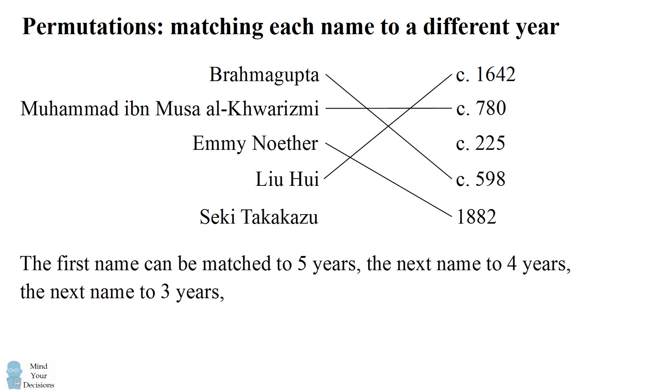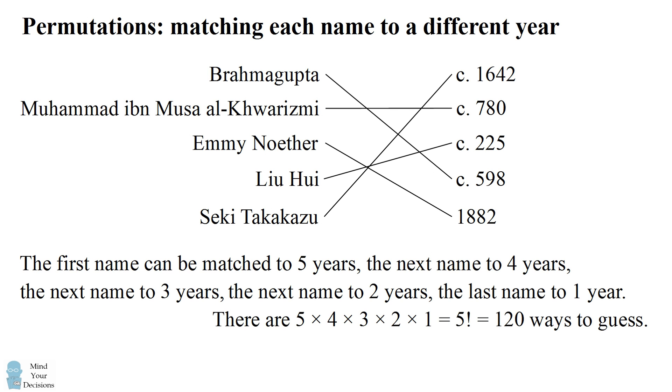So we see a pattern here. The next name is going to have two possible choices. Once you make your choice, the last name will have only one possible choice. So we can count the total number of possible ways to guess by multiplying each of these options. We have 5 times 4 times 3 times 2 times 1, which is equal to 5 factorial or 120 different ways to guess.